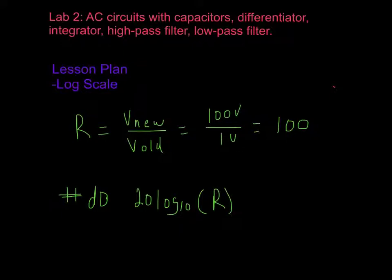So log 10 of 100 is 2, because that's how many times I have to multiply 10 by itself to get 100. Log 10 is 2 times 20 is going to be 40, so 100 in the log units, an increase in voltage, is going to be 40 dB.